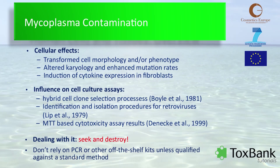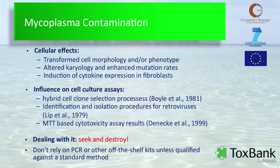The first approach to take in dealing with mycoplasma contamination is to carry out routine examination of cultures using a qualified method to detect them, and once you have detected them, to destroy them — only retaining cells which are contaminated if you have no other source of those particular cells. It's important not to rely on off-the-shelf methods unless they've been qualified against standard methodologies, particularly because the sensitivity of these methods can vary significantly, and also their specificity in that they may miss certain species of mycoplasma.